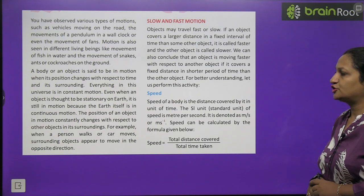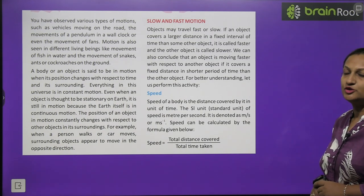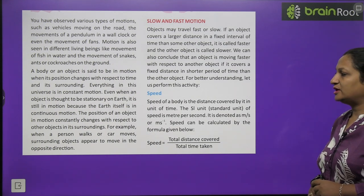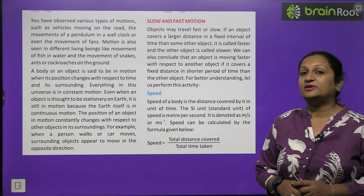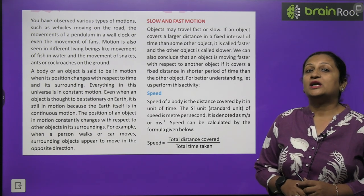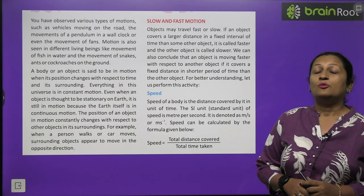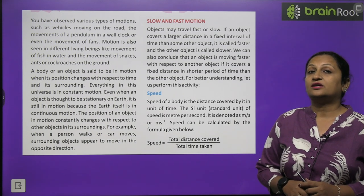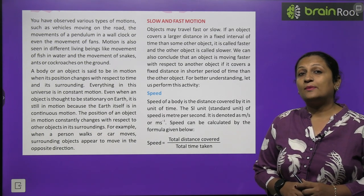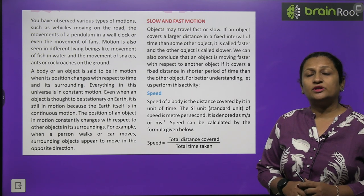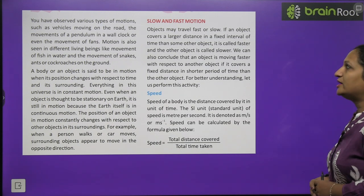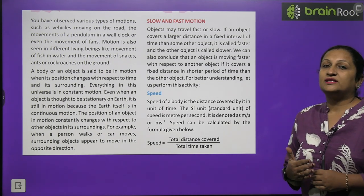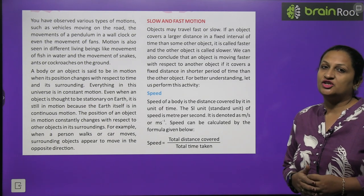The position of an object in motion constantly changes with respect to other objects in the surrounding. For example, when a person walks or moves, surrounding objects appear to move in the opposite direction. You must have noticed — when you travel by bus or train, which is moving at high speed, all the trees and plants appear to be moving in the opposite direction.